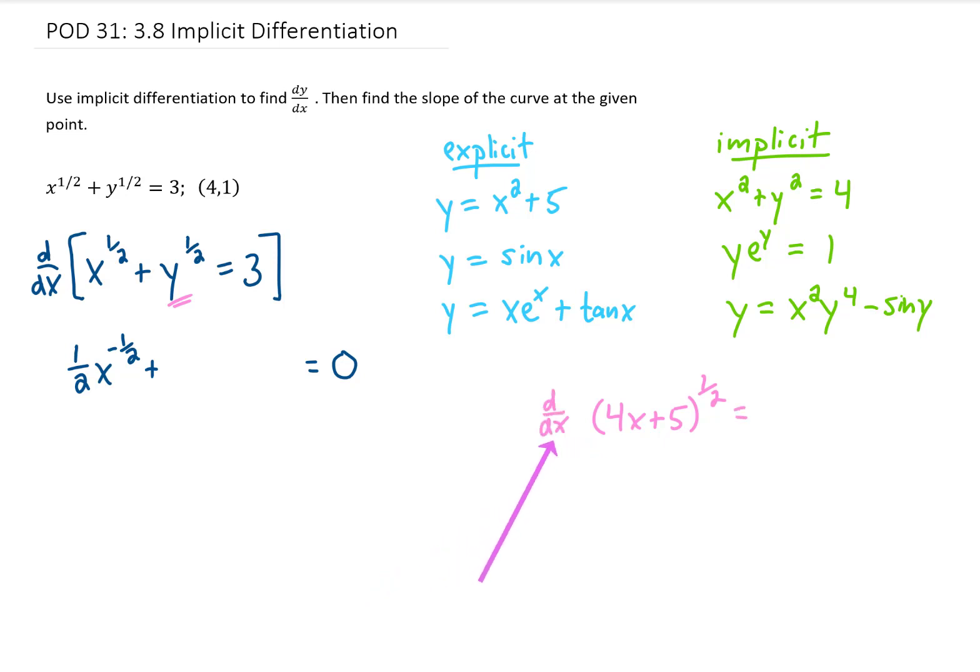we learned in the chain rule section that we would start with our outermost function. That is, something raised to the 1/2 power. We could bring that 1/2 power down, reduce that power by 1, but then the chain rule says that we would have to take the derivative of the inside function, the 4x + 5, and we would have to multiply our previous answer by that derivative.